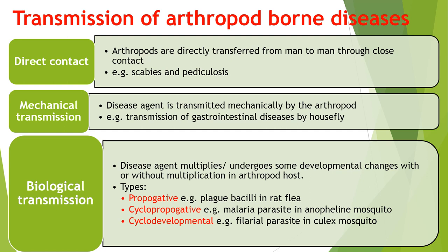In biological transmission, the disease agent multiplies or undergoes developmental changes with or without multiplication in the arthropod host. There are three subtypes: propagative, cyclopropagative, and cyclo-developmental. In propagative biological transmission, the disease agent only multiplies in the body of the vector without undergoing any cyclical change — for example, plague bacilli in rat flea. In cyclopropagative transmission, the disease agent undergoes cyclical changes and multiplies — for example, the malaria parasite in the Anopheles mosquito. In cyclo-developmental transmission, there are only developmental changes without multiplication — for example, the filarial parasite in the Culex mosquito.